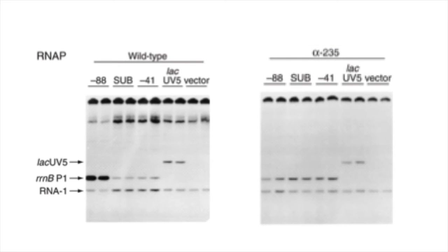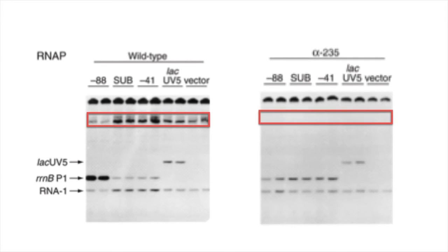Comparing both gels side by side — the left with the C-terminal domain intact and the right with it removed — something stands out. All the RNA transcript from one of the promoters just disappears in the second gel. This leads to the conclusion that the C-terminal domain is important for that promoter, and when it is removed, transcription simply won't occur.